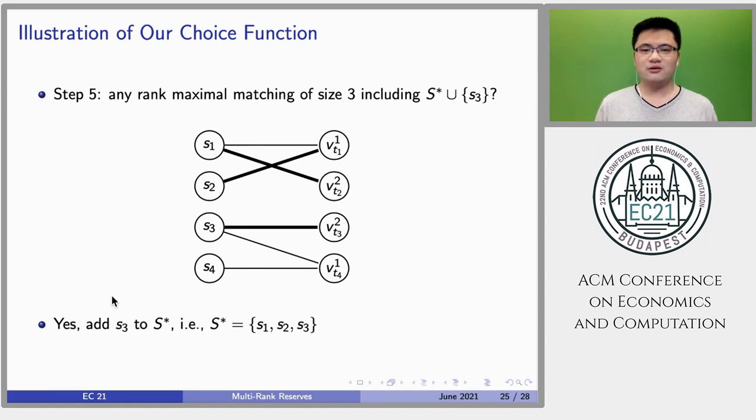Can we find a rank-maximal matching of size 3 that contains S1, S2 and S3? Yes, then add S3 to S* and consider student S4.